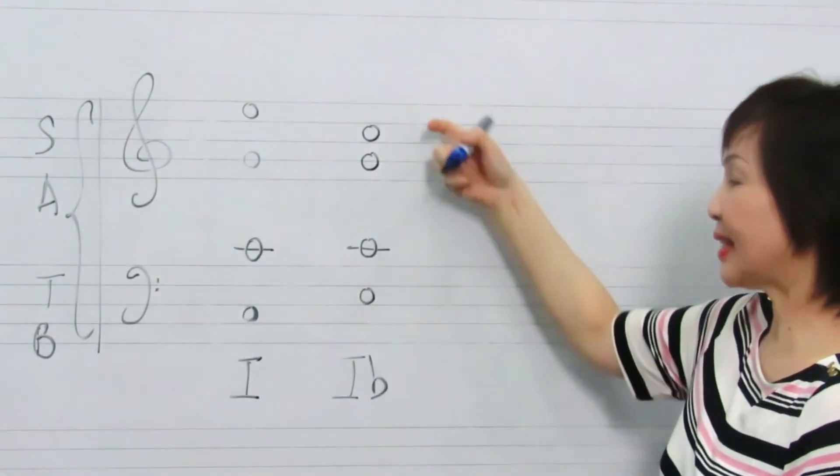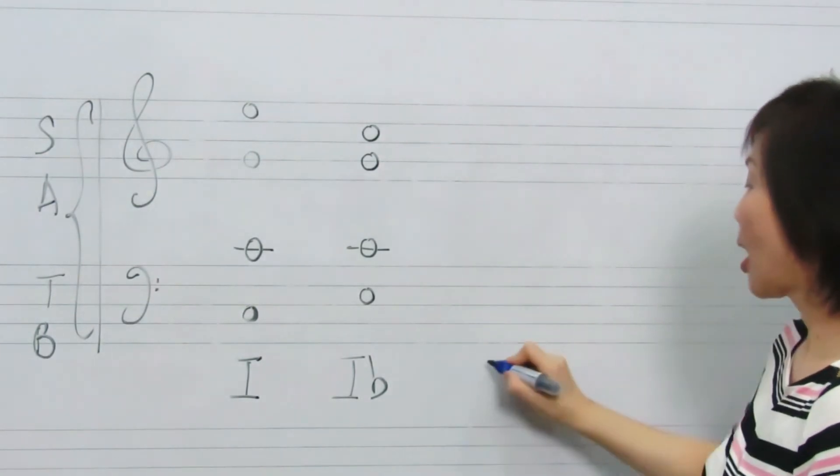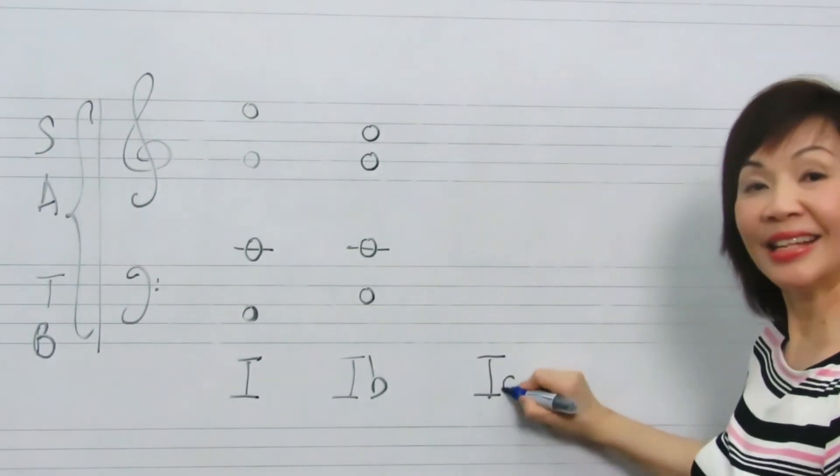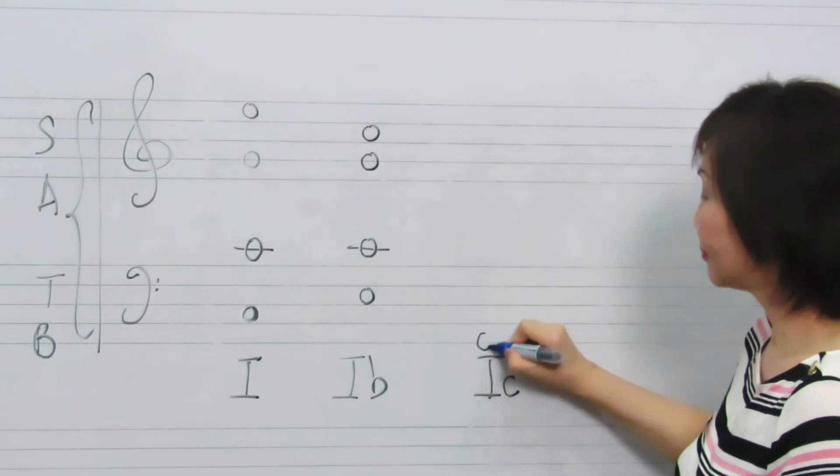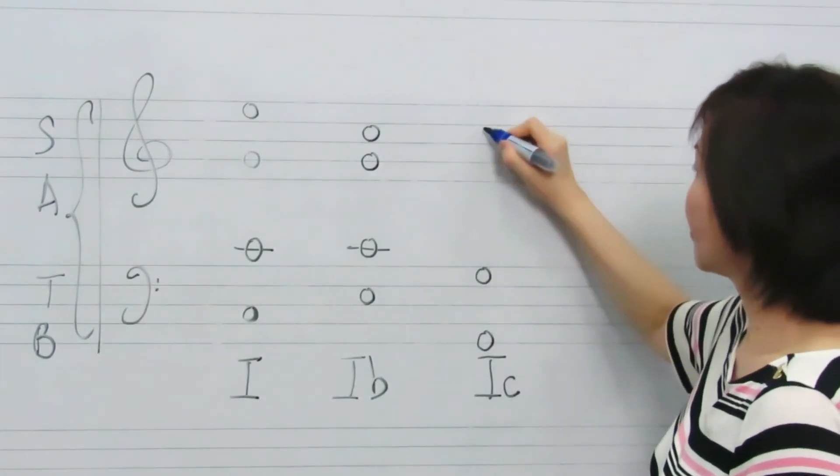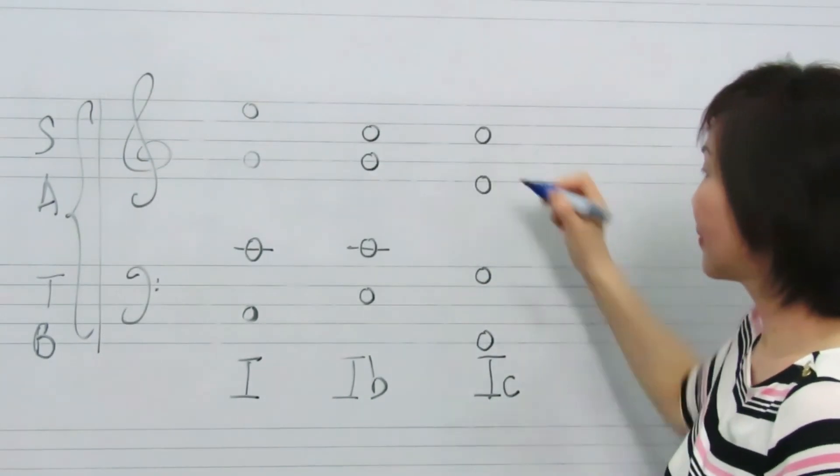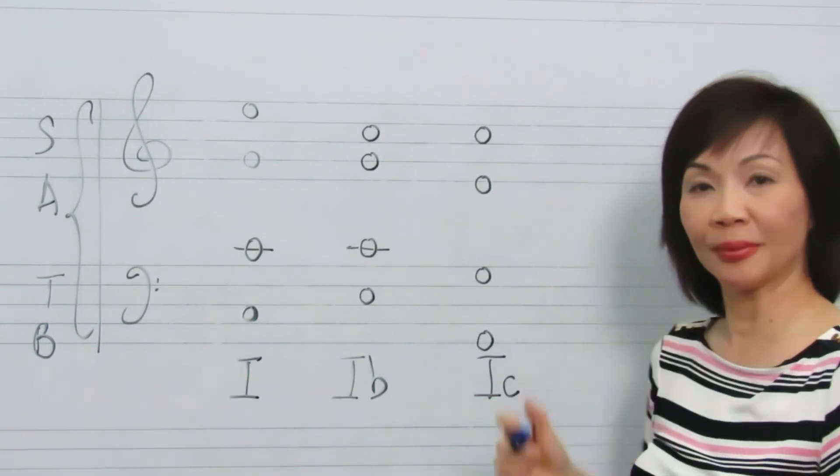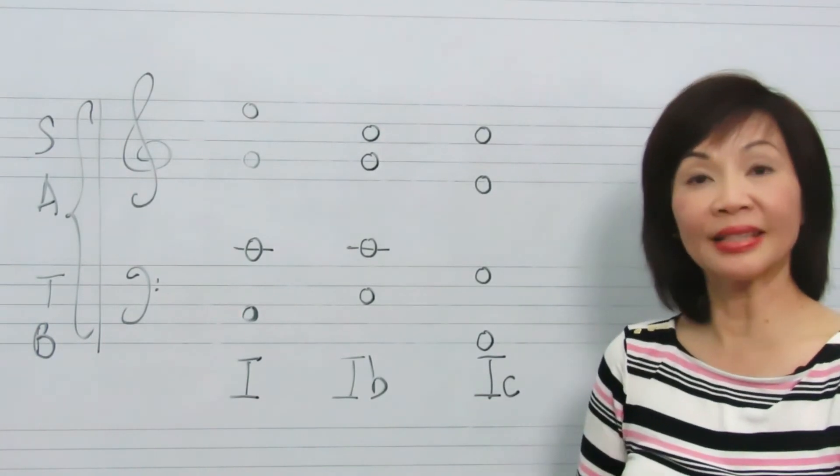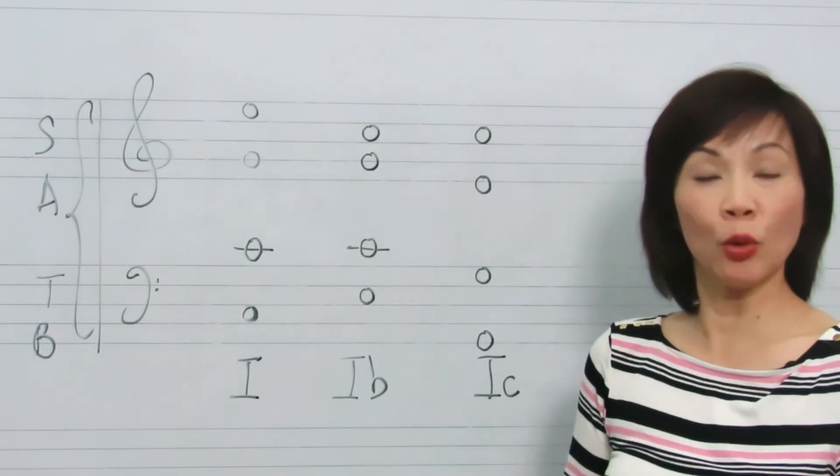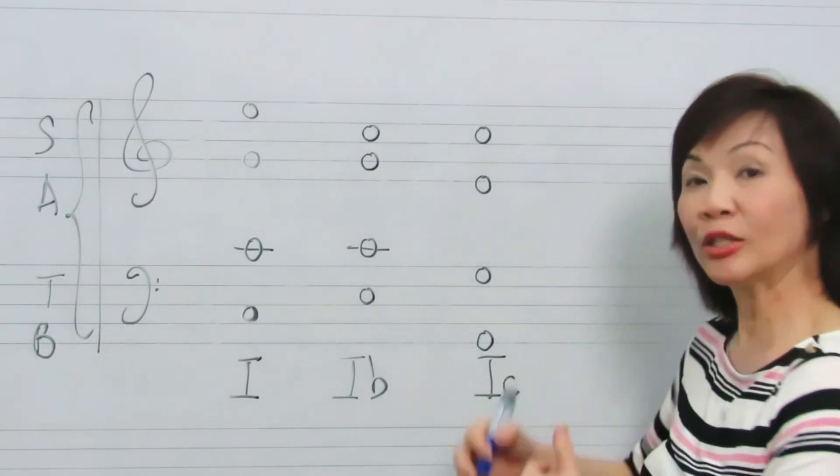So we have C, C, E, G. When we write the chord in second inversion, it will be C, E, G, G. The reason being a second inversion chord is usually weak and the bass note needs to be doubled.